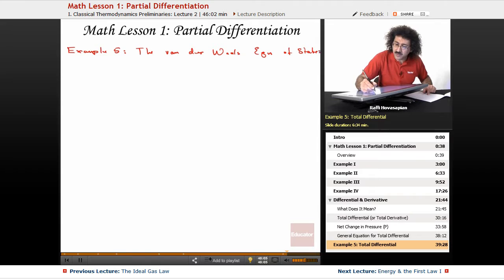So the Van der Waals equation of state - and again, it's an equation of state because it gives you the state of a particular system - it is, I'm going to write it in this form: P = RT over V minus B minus A over V squared.